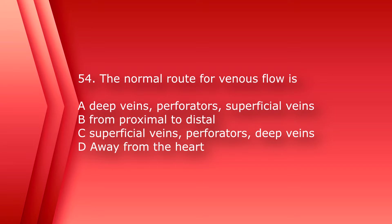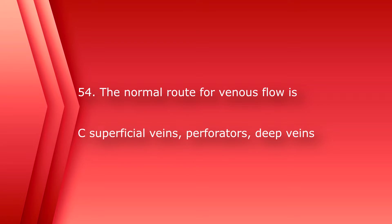Number 54: The normal route for venous flow is: A) deep veins, perforators, superficial veins; B) from proximal to distal; C) superficial veins to perforators to deep veins; or D) away from the heart. The answer is C, superficial veins to perforator veins to deep veins, then towards the heart.